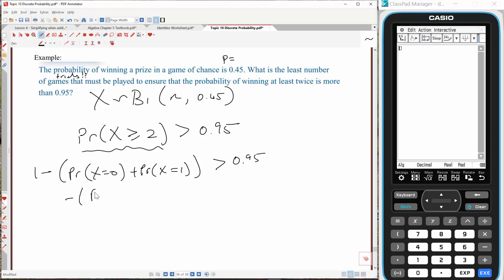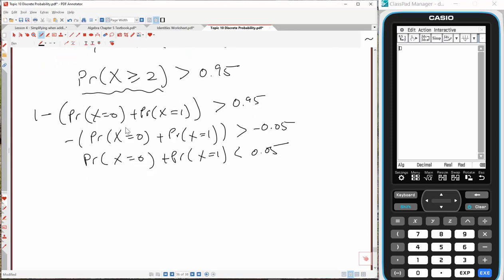Let's remove 1 from both sides. Now let's dump that negative. Now let's write up what we know about this. When we're working out a particular value for the random variable, we can use that formula nCr, probability of success to the power of r, 1 minus p to the power of n minus r. That's the one that we're using.